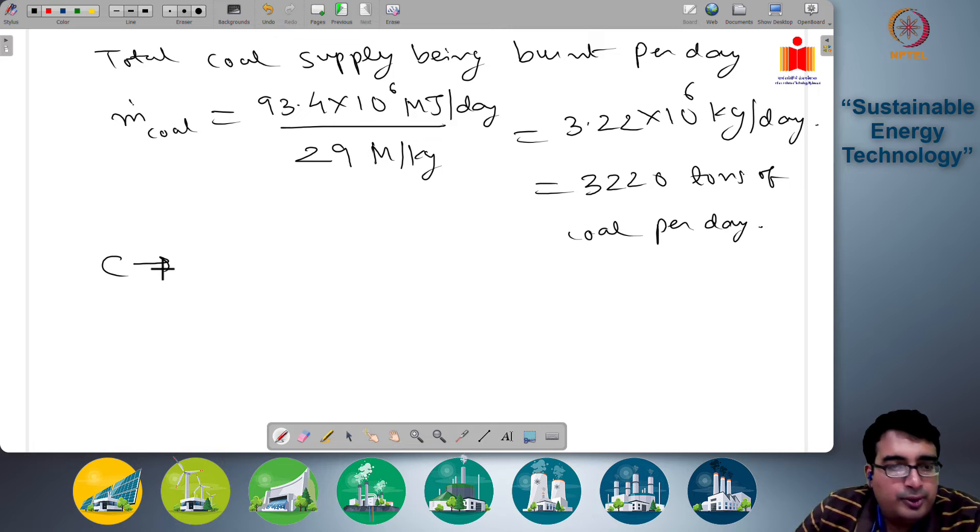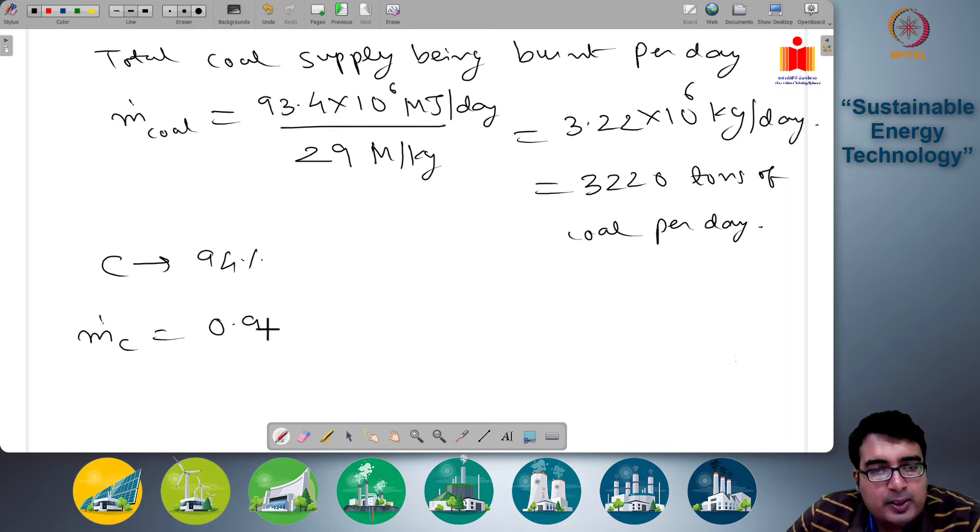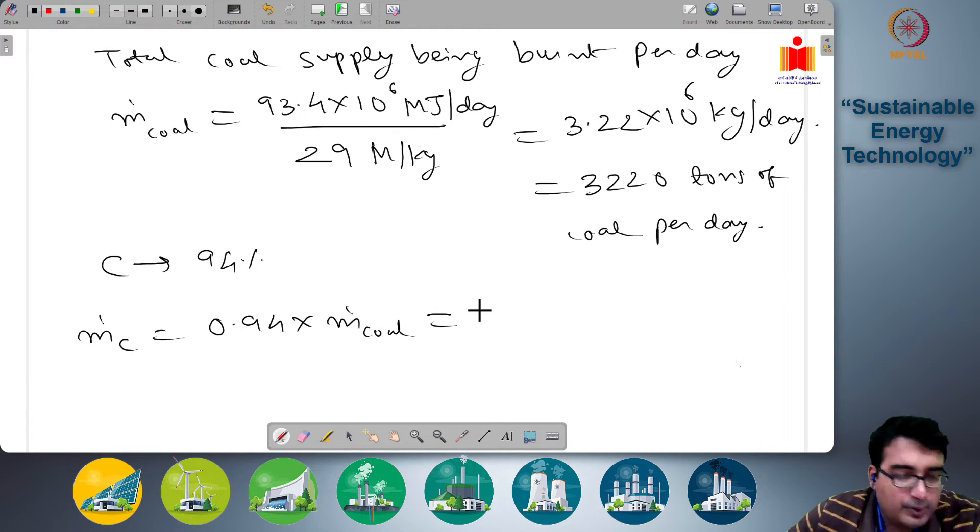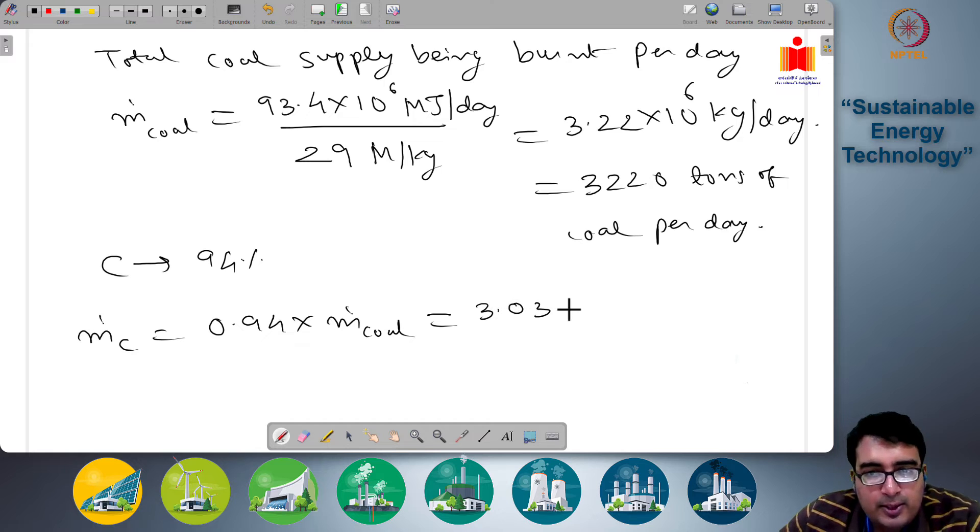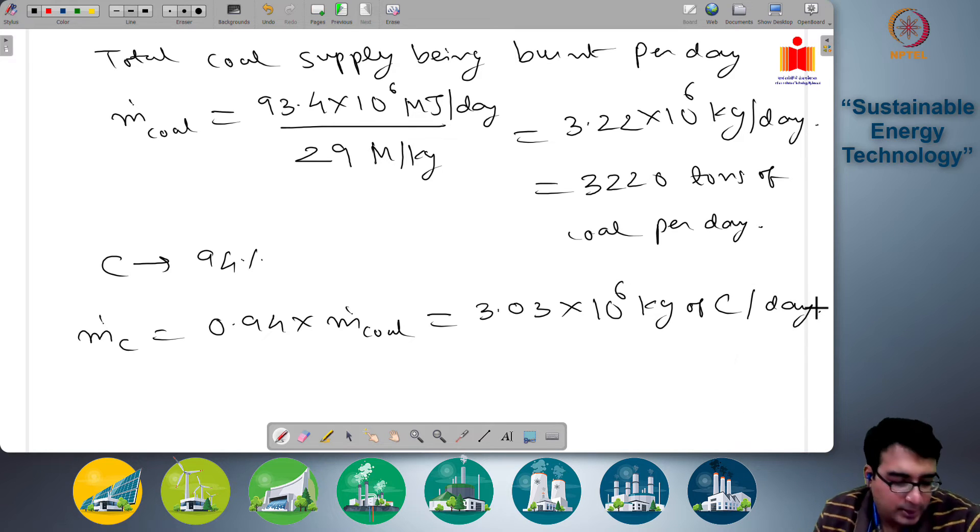Now carbon is 94% of this coal. So m dot C is 0.94 times m dot coal, which is equal to 3.03 × 10^6 kg of carbon per day is being burnt.